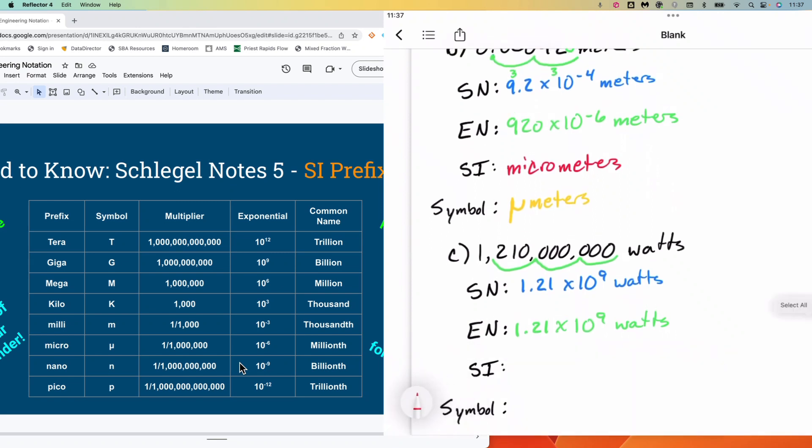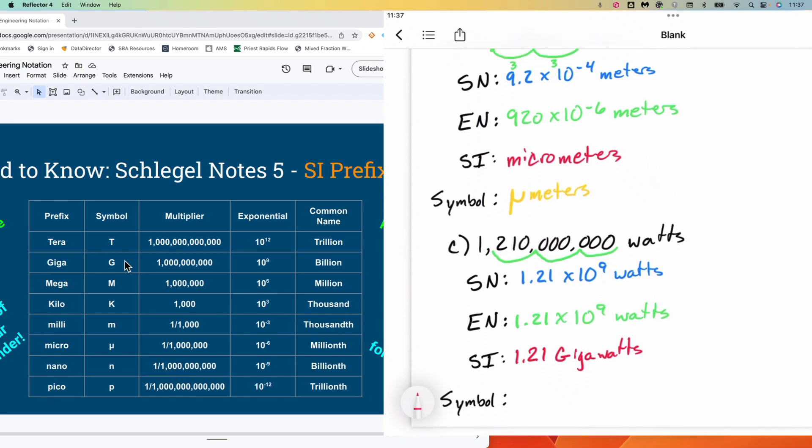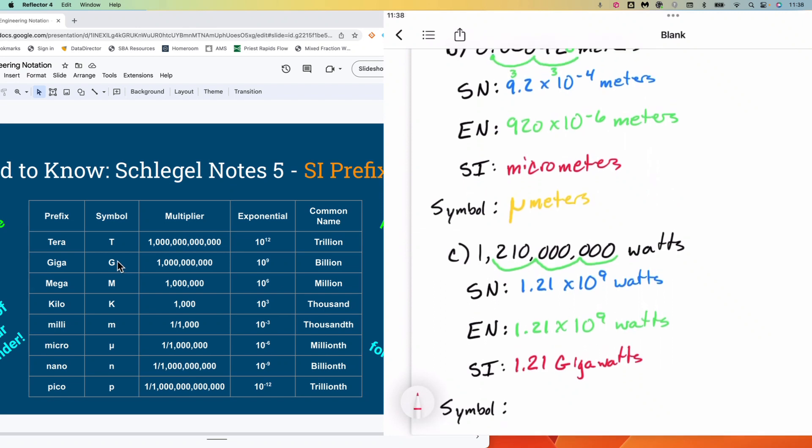The SI prefix for this, if we come over here, we've got an exponent of 9. That is going to be giga. And so we get 1.21 gigawatts. I think Doc would be proud. And lastly, the symbol for giga is a capital G. And so we would end up with capital G watts.